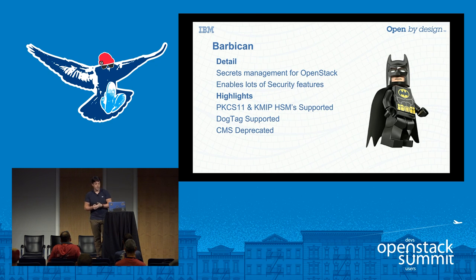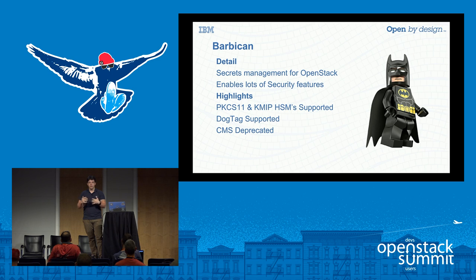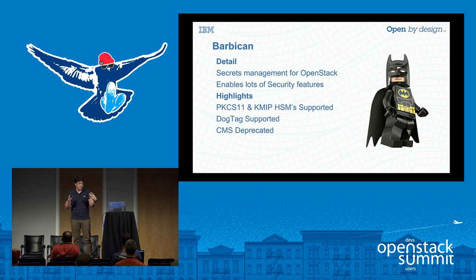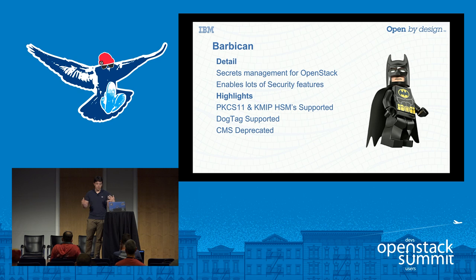Barbican provides secrets management for OpenStack and enables a lot of security features. It's a really pivotal security technology within OpenStack because basically anything that wants to do encryption for its users - like Swift, like Nova - will rely on Barbican for its secrets. It supports PKCS11 and KMIP HSMs. DogTag is also supported and has been for a very long time. As a highlight: the certificate management system is deprecated. This means Barbican isn't going to be responsible for requesting certificates for your service anymore, but you can still warehouse them there. This signifies a real narrowing of focus within Barbican to really managing secrets.